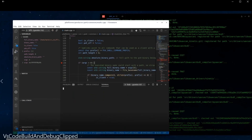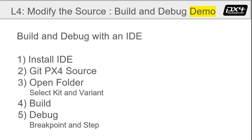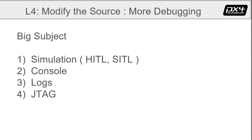Now we'll break out of debugging. There's a lot more to debugging than this — we just don't have time for all that; that's for another video. A few things you might want to look into: one, simulation in both hardware and software so you can fly without flying — you already got a taste of that with JMAVSim in the first demo. Two, the PX4 console. Three, various logs that are generated. And four, JTAG if you need to get closer to the hardware. All of these are expanded in the appendix.